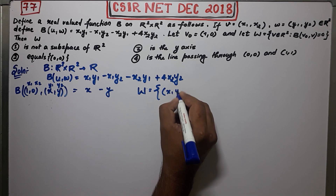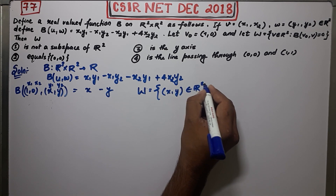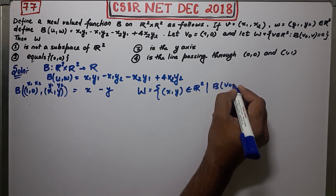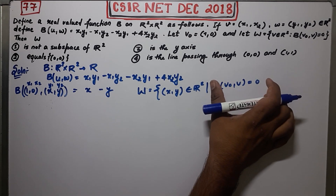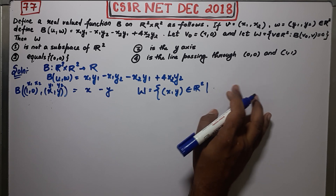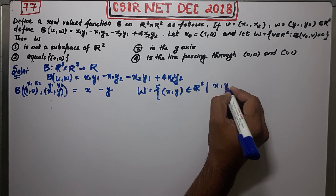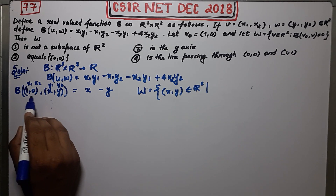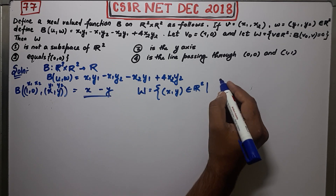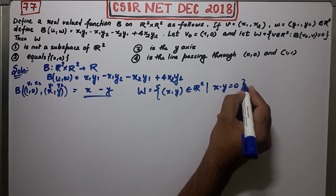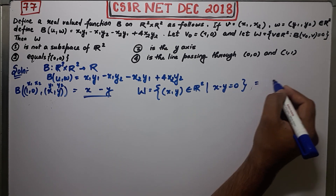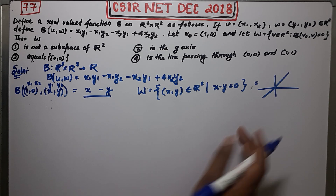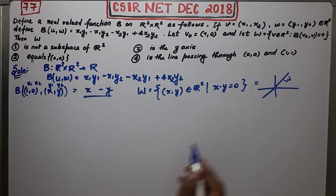W is defined to contain all (x, y) belonging to R² such that b(v₀, v) = 0. We calculated b(v₀, v), so the condition becomes x minus y = 0. This is nothing else but the line y = x. So W is this line, and now we have to prove it is a subspace.